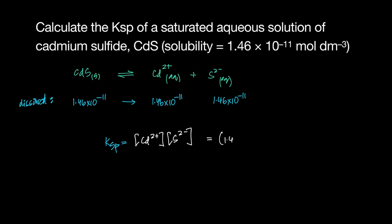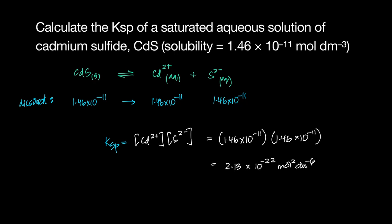KSP = 1.46×10⁻¹¹ × 1.46×10⁻¹¹, which gives approximately 2.13×10⁻²², with units mol² dm⁻⁶ — because there are only two concentration terms. This is how you can calculate the KSP for anything if you're given the solubility.